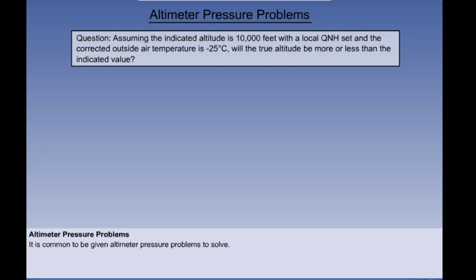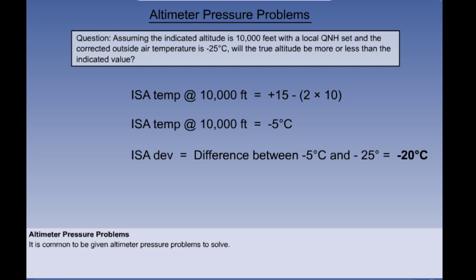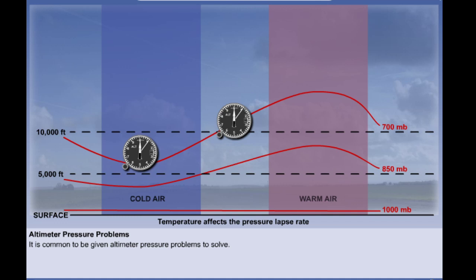Let's look at another example. Assuming the indicated altitude is 10,000 feet with a local QNH set and the corrected outside air temperature is minus 25 degrees Celsius, will the true altitude be more or less than the indicated value? The way to find the answer is to ask what would the ISA temperature be at 10,000 feet? It would be plus 15 at sea level minus 2 degrees per thousand feet, so plus 15 minus 20 equals minus 5 degrees Celsius. So at minus 25 degrees Celsius, we are flying in ISA minus 20 degrees. We are therefore in colder than standard conditions. A colder temperature means that the altimeter over-reads — the true altitude will be less than the indicated altitude.